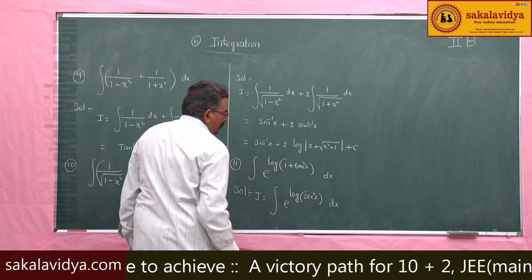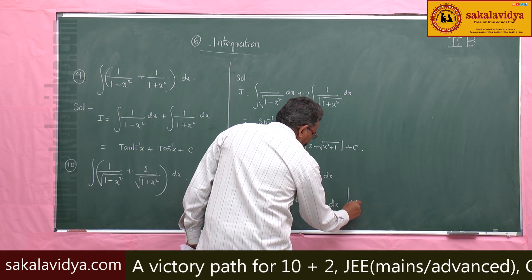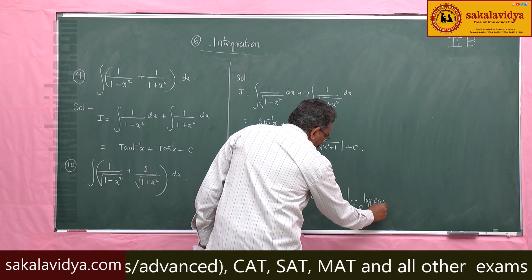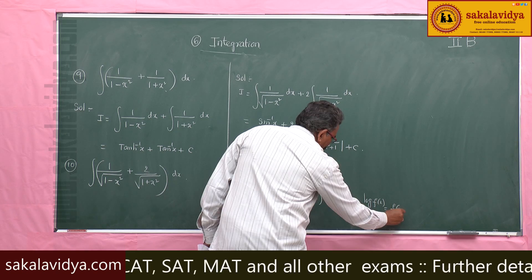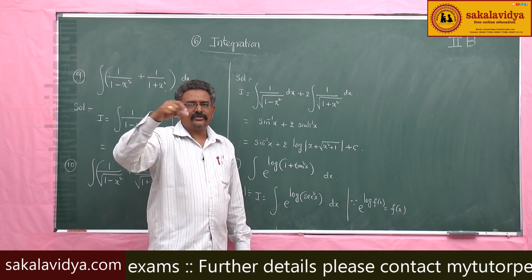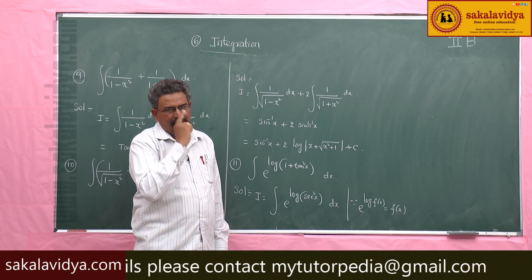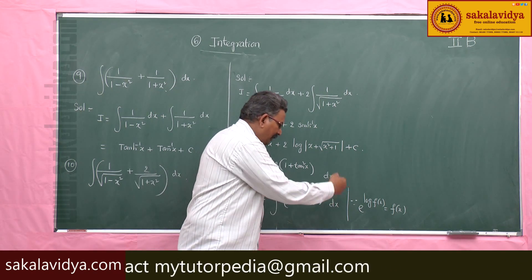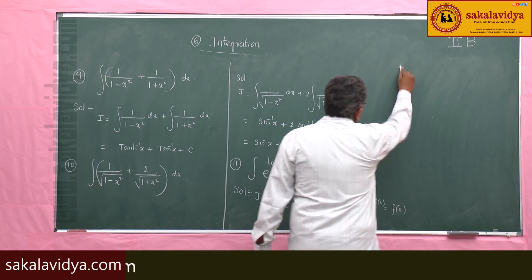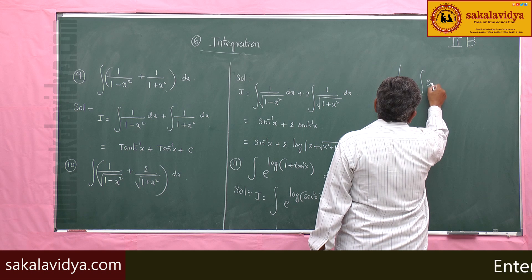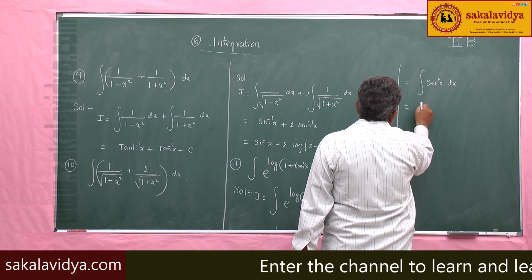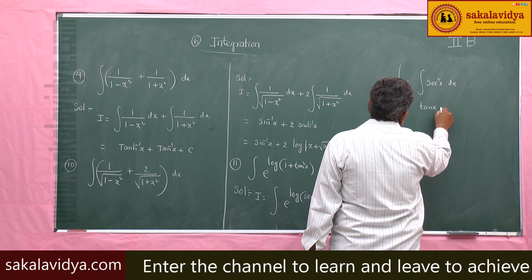From logarithms we have the formula: e to the power of log f(x) equals f(x), treating log as base e. So e power log of secant square x becomes simply secant square x. Therefore the integral becomes integral of secant square x dx, which equals tan x plus c.